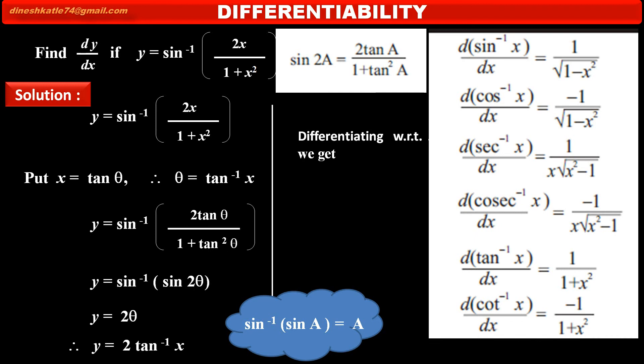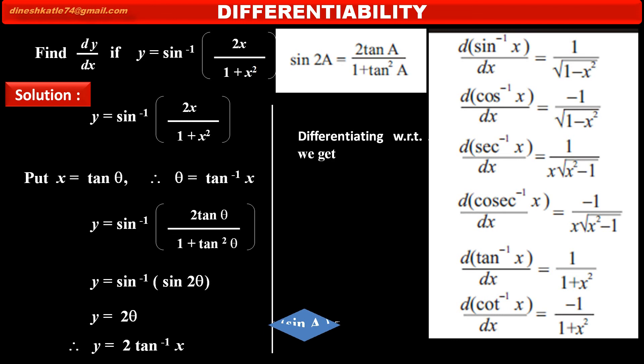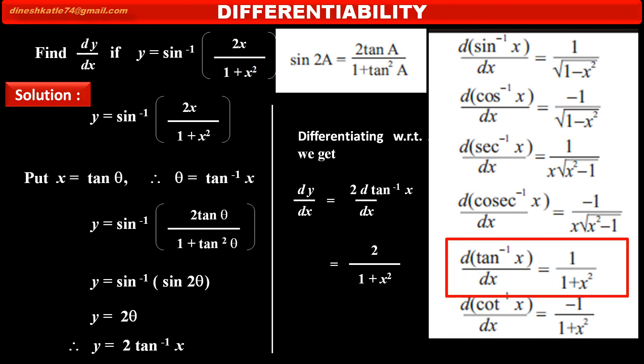Therefore, differentiating with respect to x, we get dy by dx is equal to 2 into derivative of tan inverse x. By using the formula, we get 2 into 1 upon 1 plus x square, that is 2 upon 1 plus x square. This is the derivative of the given function.